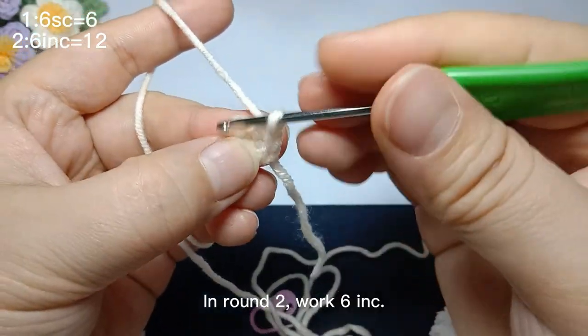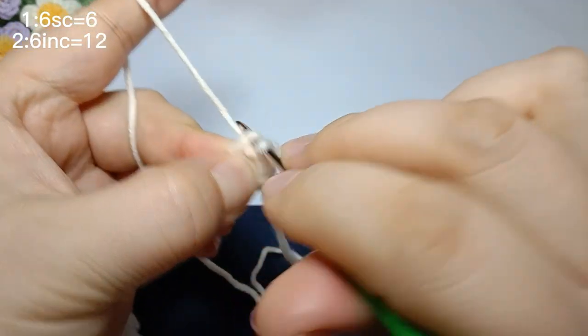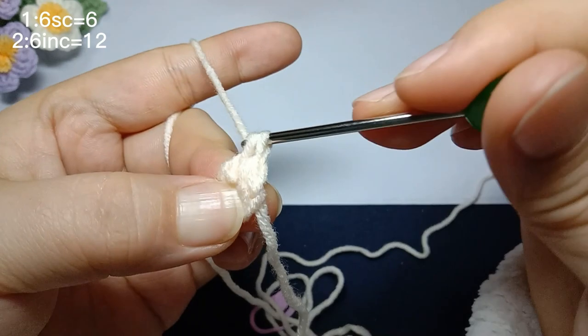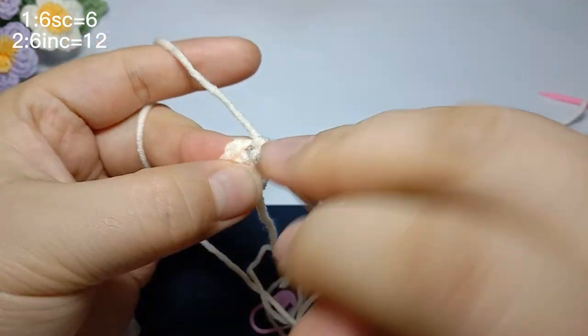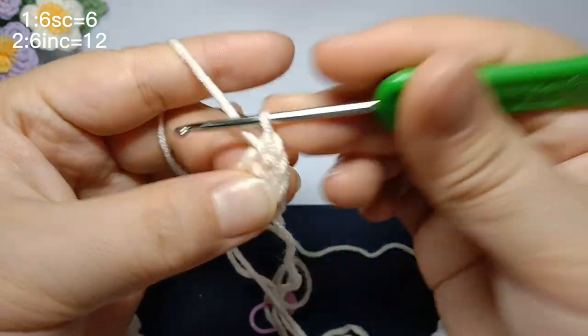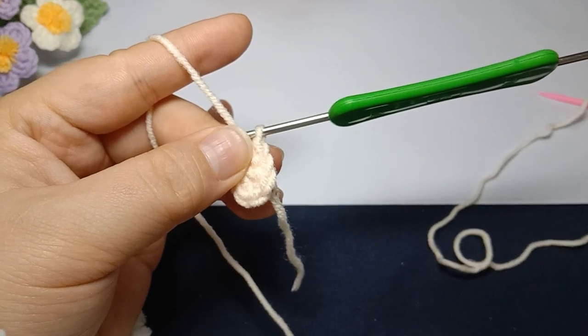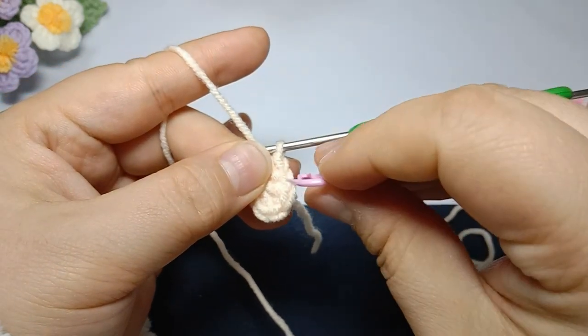In round two, work six increases. Also, place the marker in the first stitch.